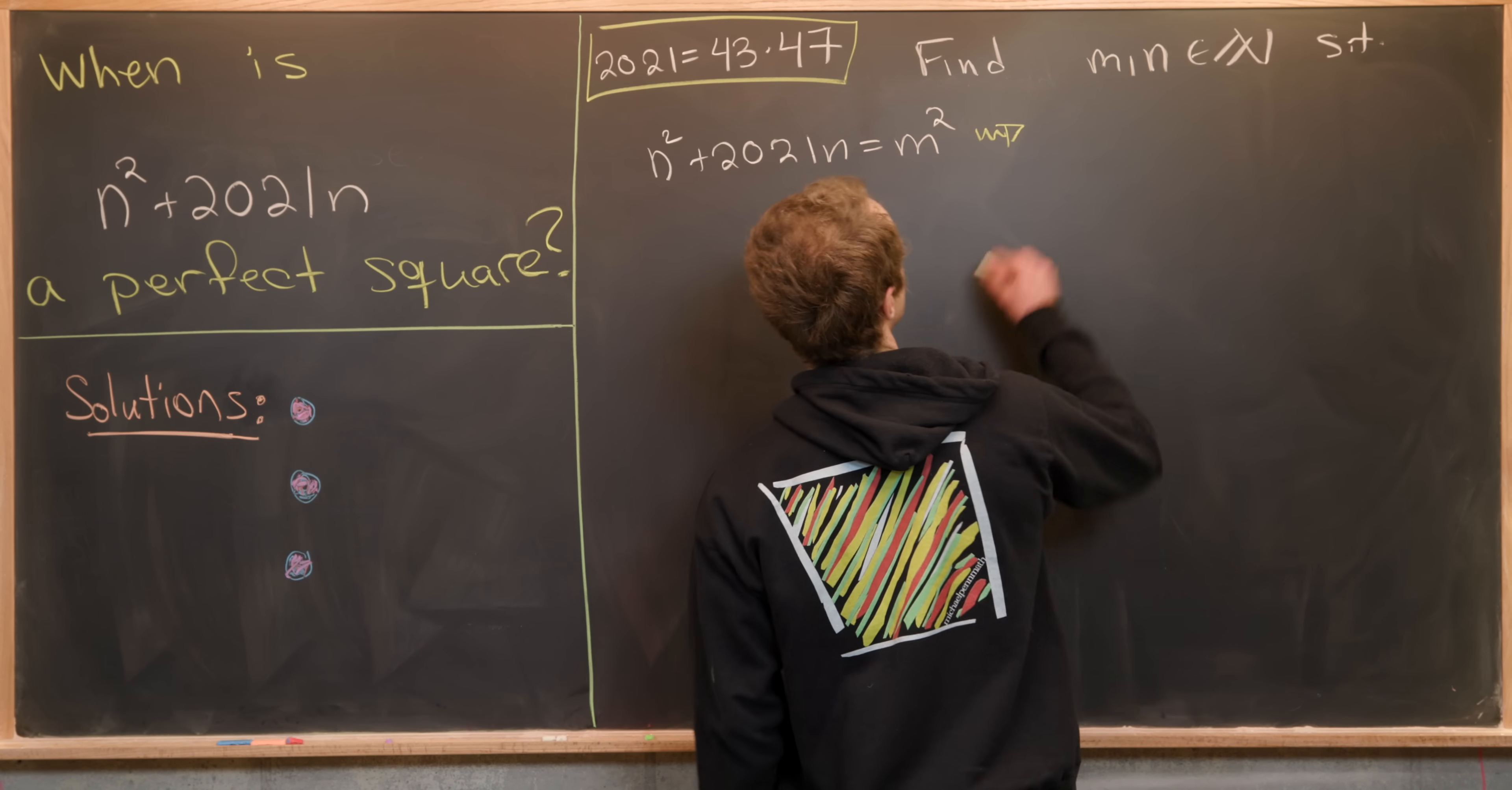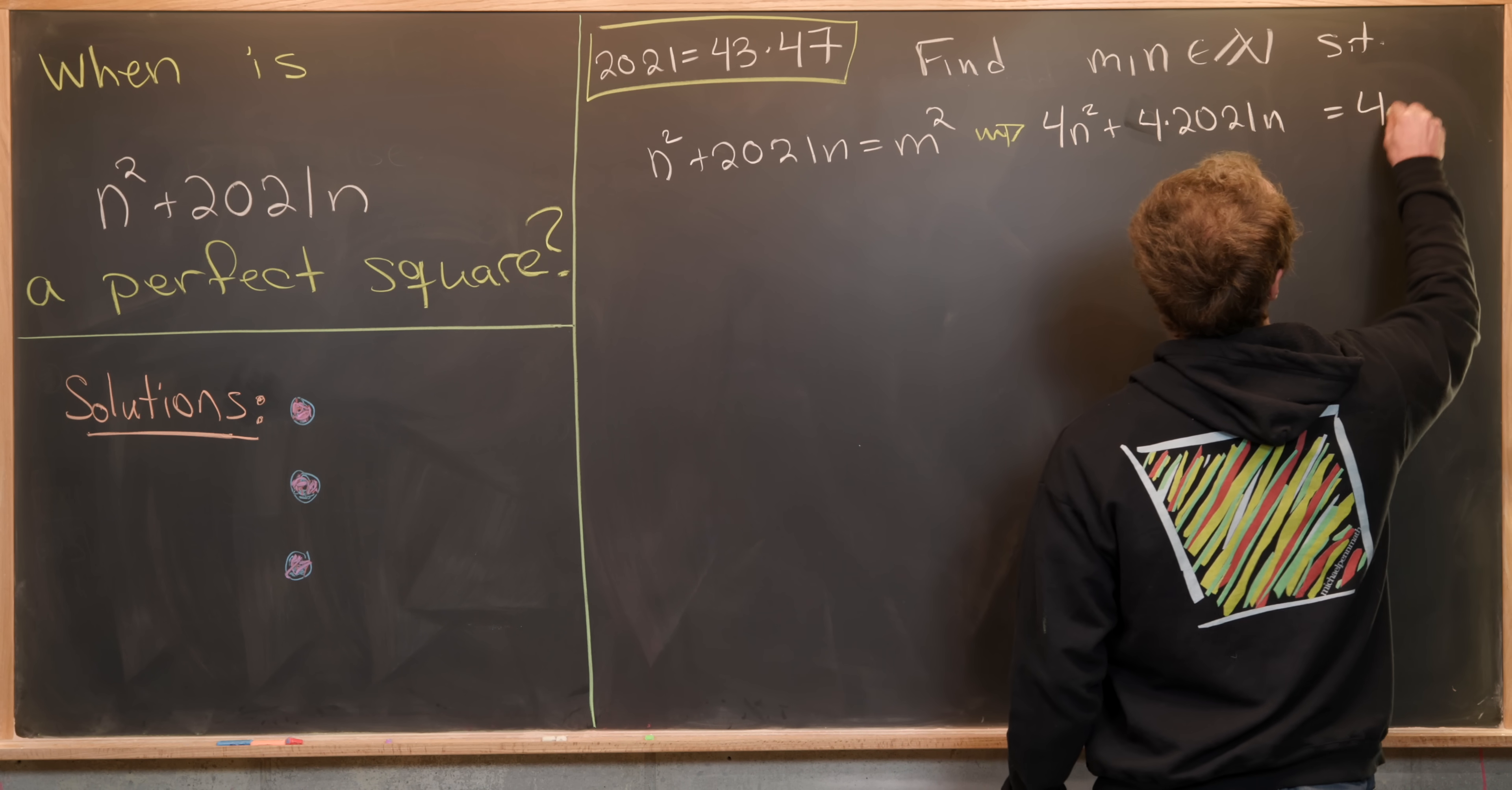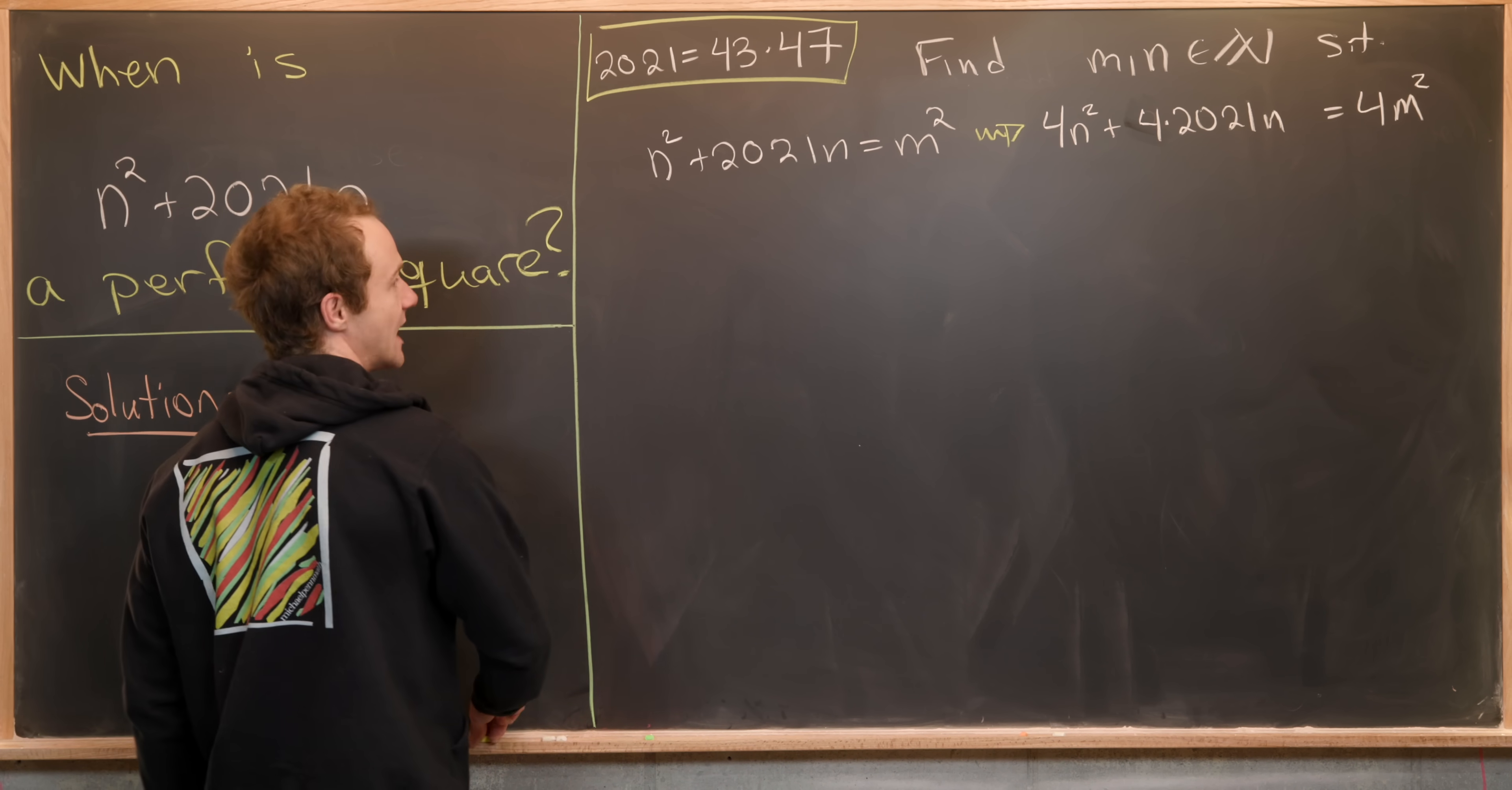So multiplying both sides of the equation by four will give us 4n² + 4(2021)n = 4m². And now we're set up to complete the square on the left hand side by adding some sort of constant. We'll do the same thing to the right hand side.